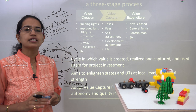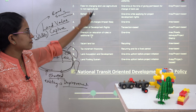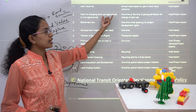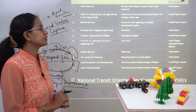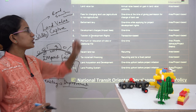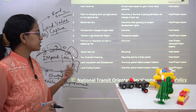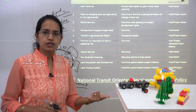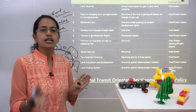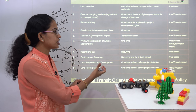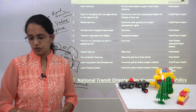Besides impact fees, urban authorities levy numerous other taxes and fees. For example, a change of land use — converting land from agriculture to commercial — requires payment of certain fees. These fees are either one-time or recurring. Change of land use is a one-time fee; transfer of development rights is a transaction-based fee; and vacant land attracts a recurring tax. Some are area-based and some are project-based. These are the ways urban bodies collect money for further development.